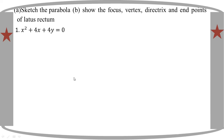Let's take a look at x squared plus 4x plus 4y equal to 0. Now let's look at the parabola equation.